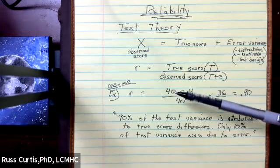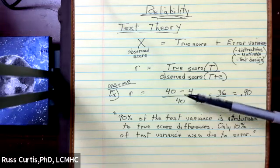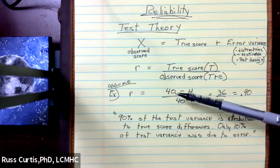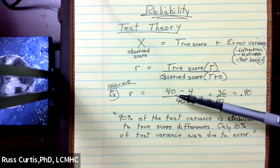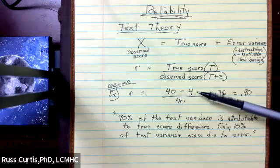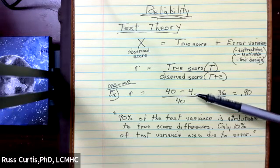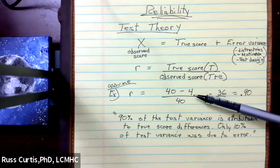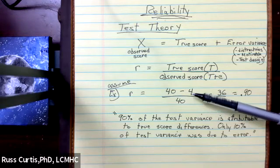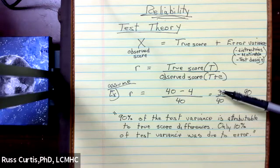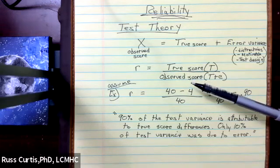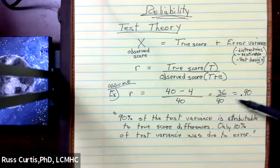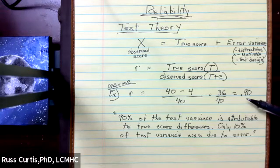So let's, we're just going to assume that we know a true score is 40, for whatever test this is. The true score is 40, the error variance is 4, and what we're going to do is subtract the error variance. We get 36. We're going to divide by the observed score, and this gives us 0.90.